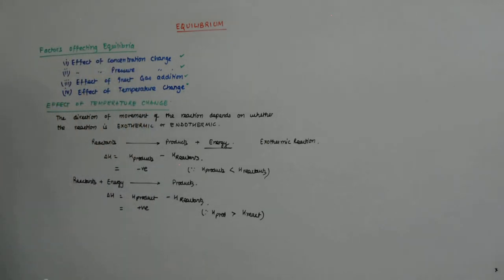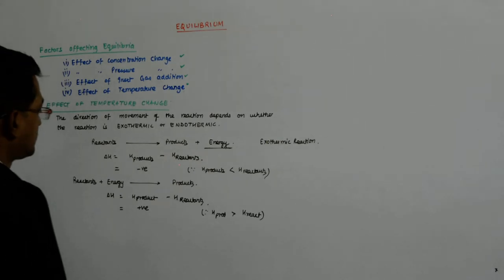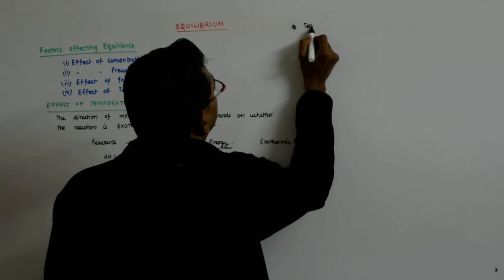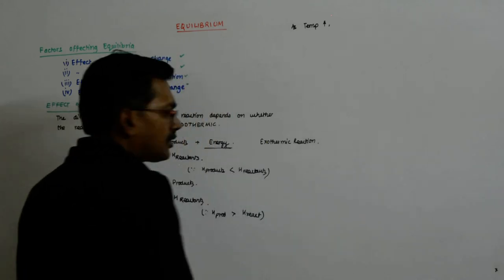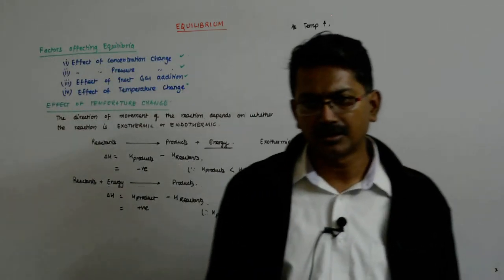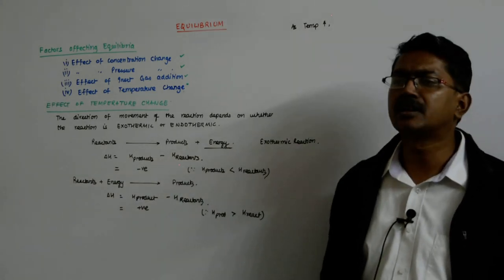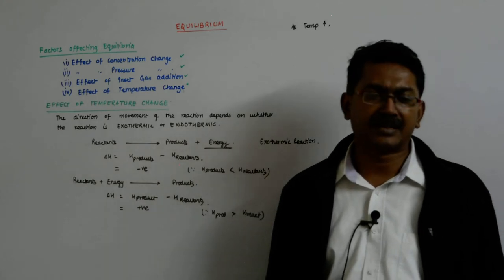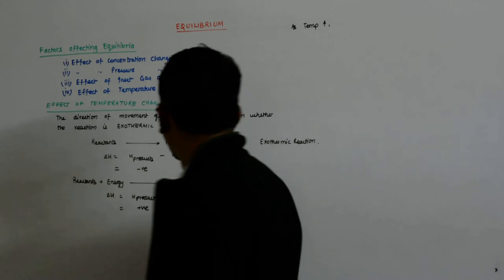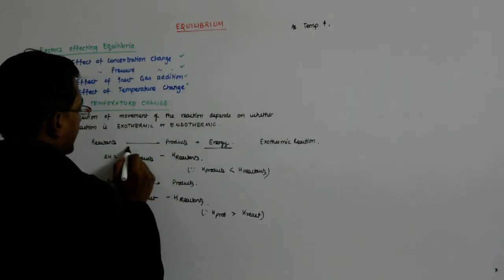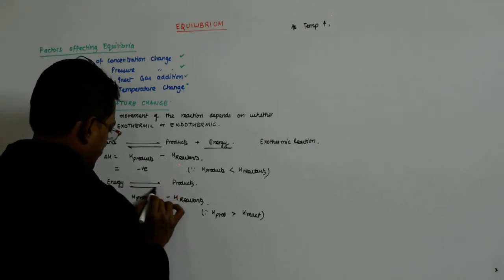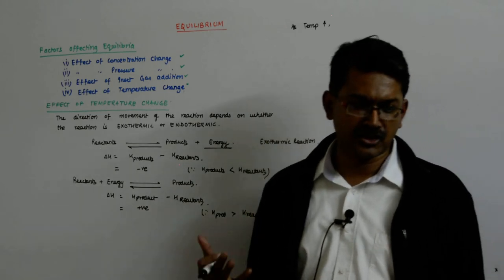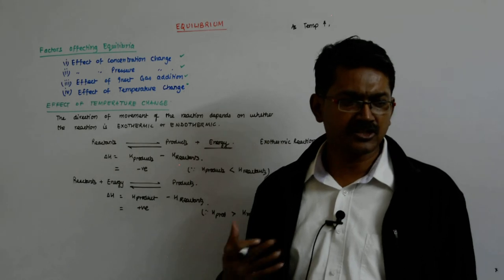Now try to understand what happens when temperature goes up. As temperature increases, you are supplying more energy to the system. It will try to consume that energy — it will try to reduce that energy. These are bi-directional reactions, so in an exothermic reaction, which direction will be favored?